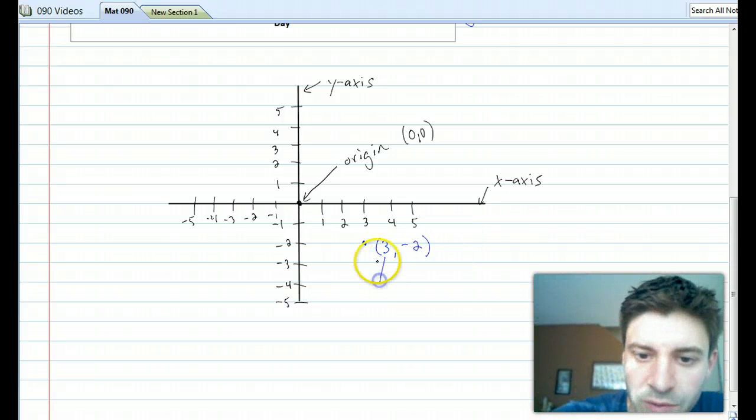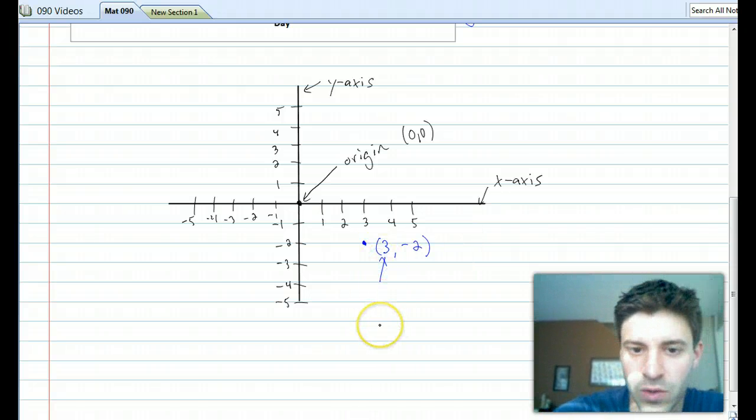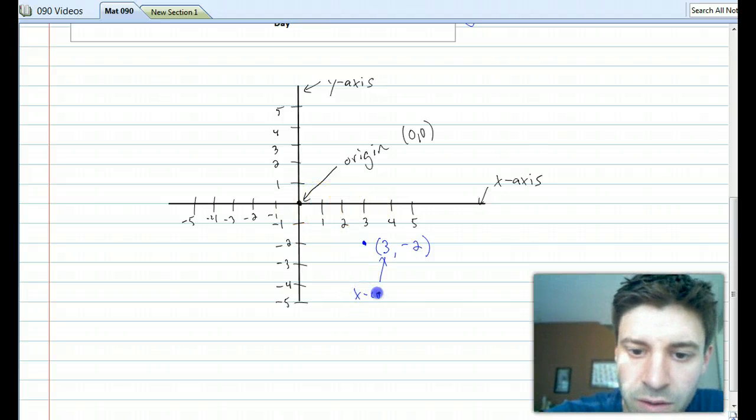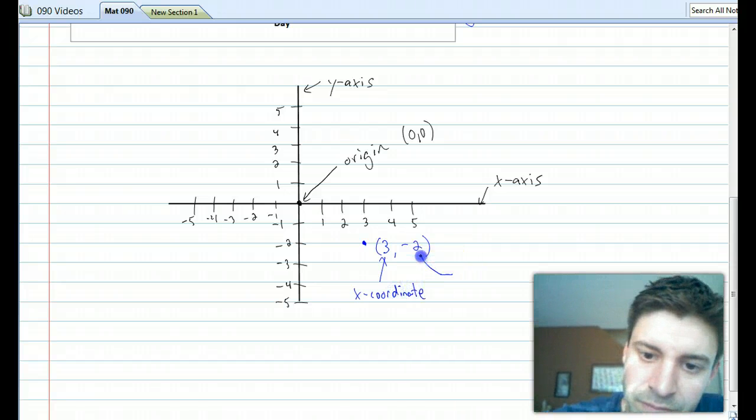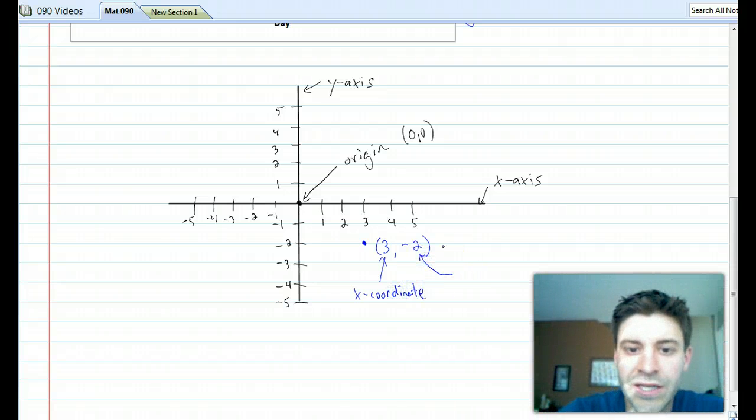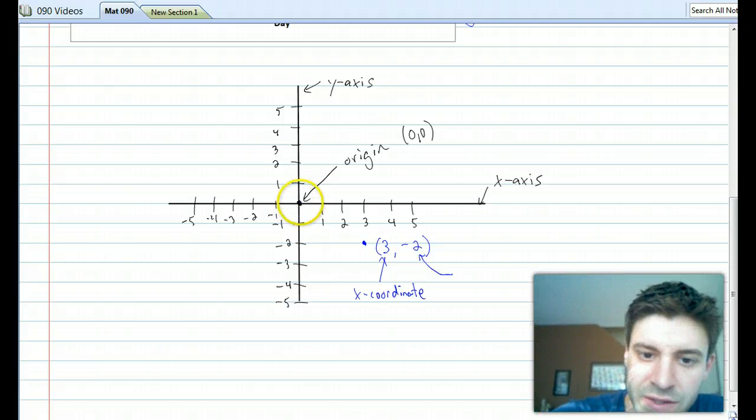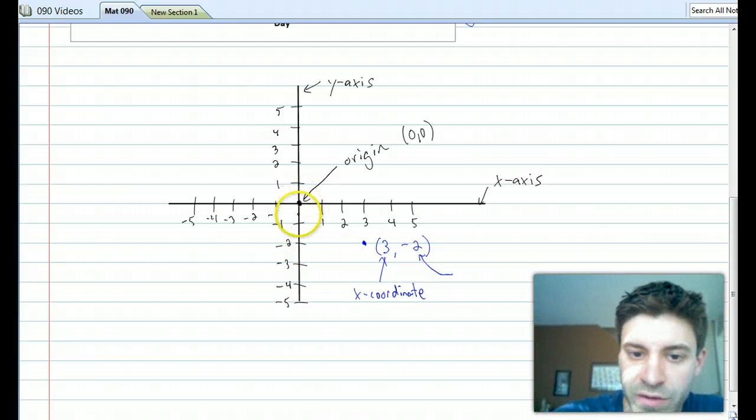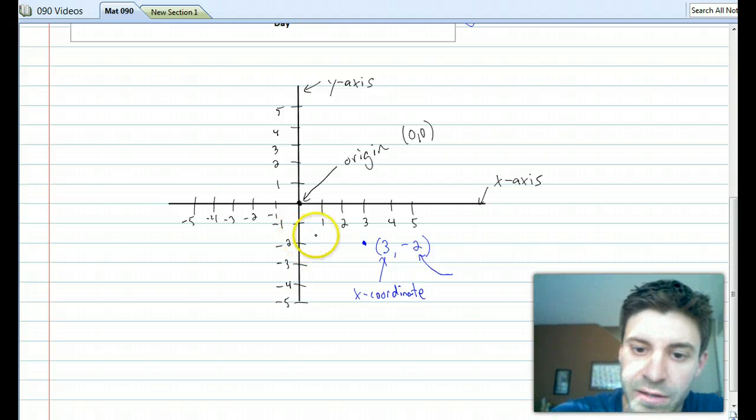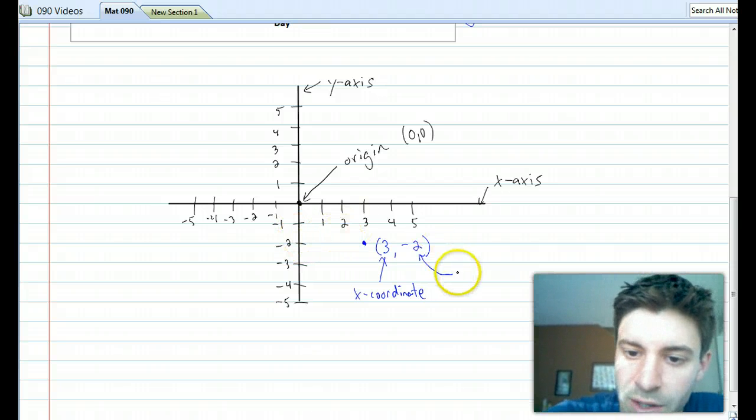Now I just use those words, I'm going to write them down. 3 is the horizontal distance from the origin, we call that the x coordinate. Negative 2 is the distance from the origin in the vertical direction, we've actually moved down 2, so it's negative, and again, we call that the y coordinate.